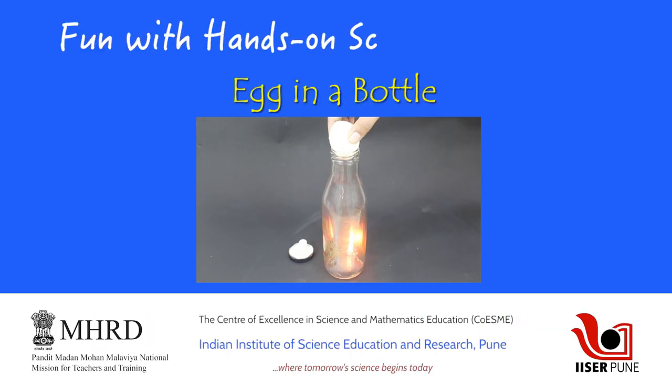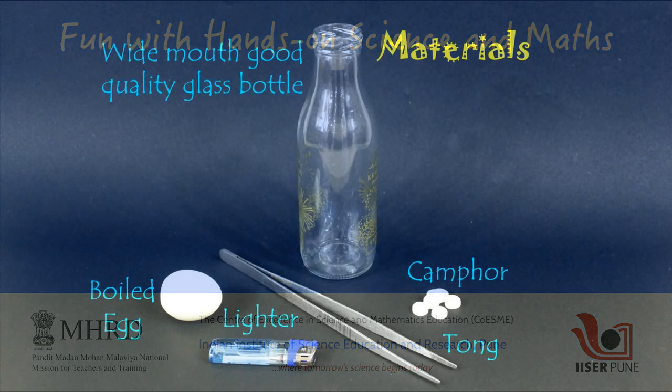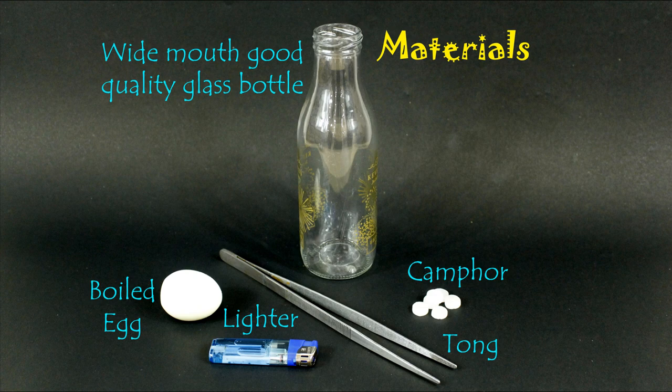Egg in the bottle. To get an egg into a bottle is a very popular and interesting experiment based on air pressure difference. We place the boiled egg on the mouth of the bottle and see how it gets sucked in. Today we'll perform this experiment using household material and learn the science behind it.